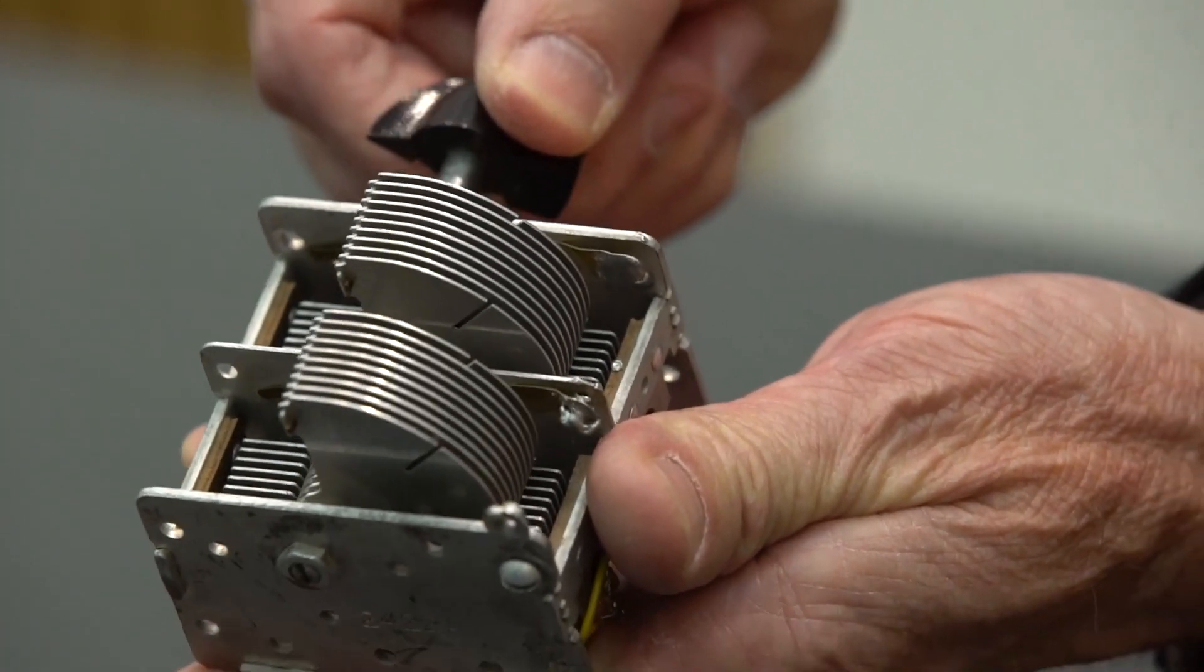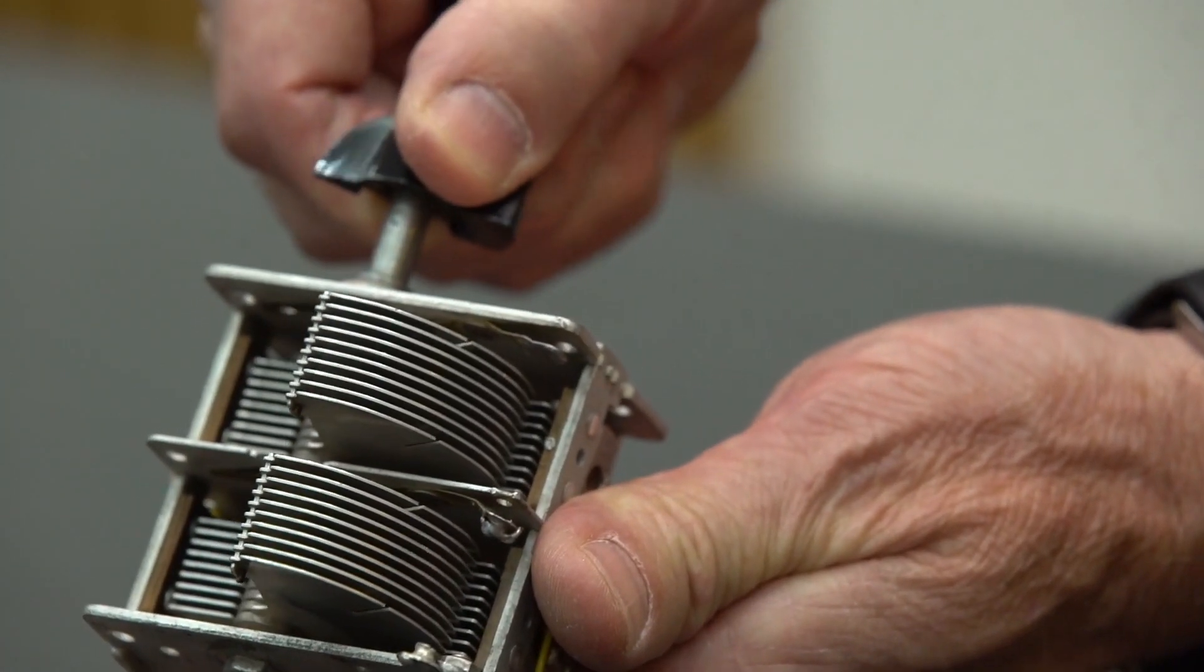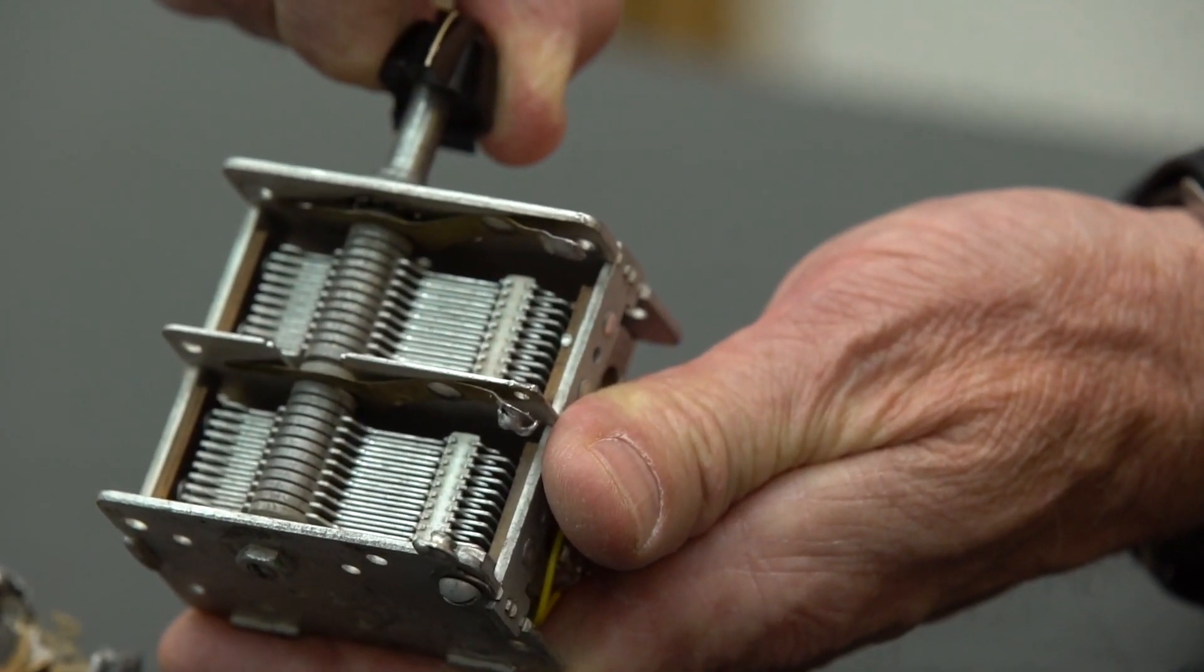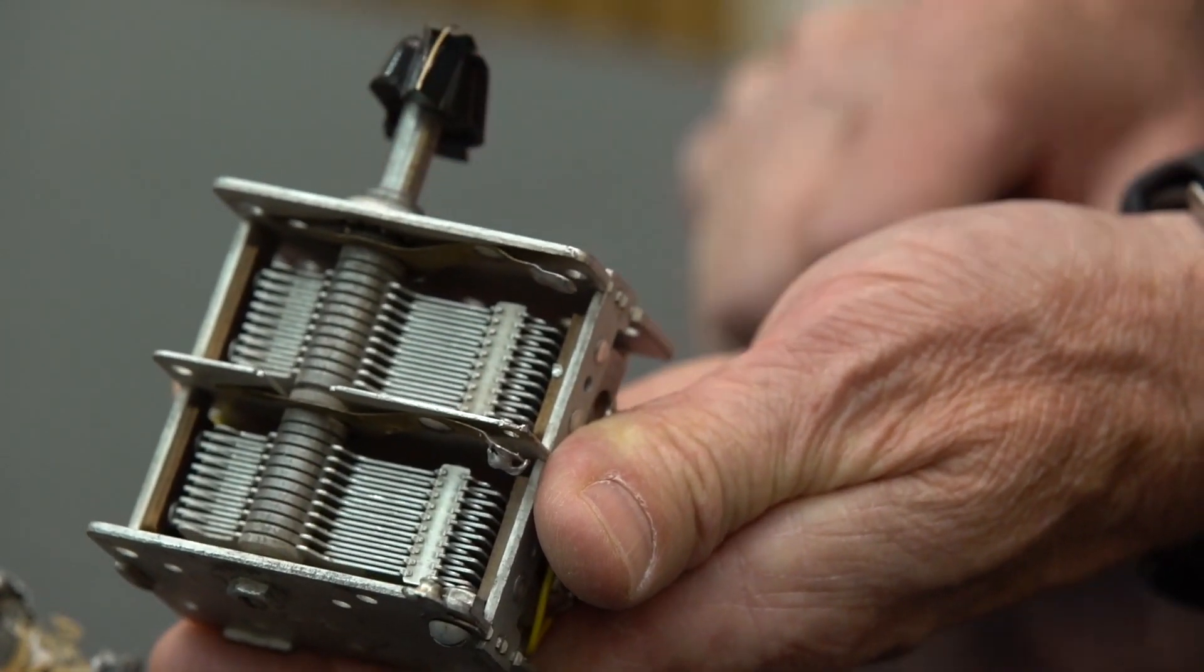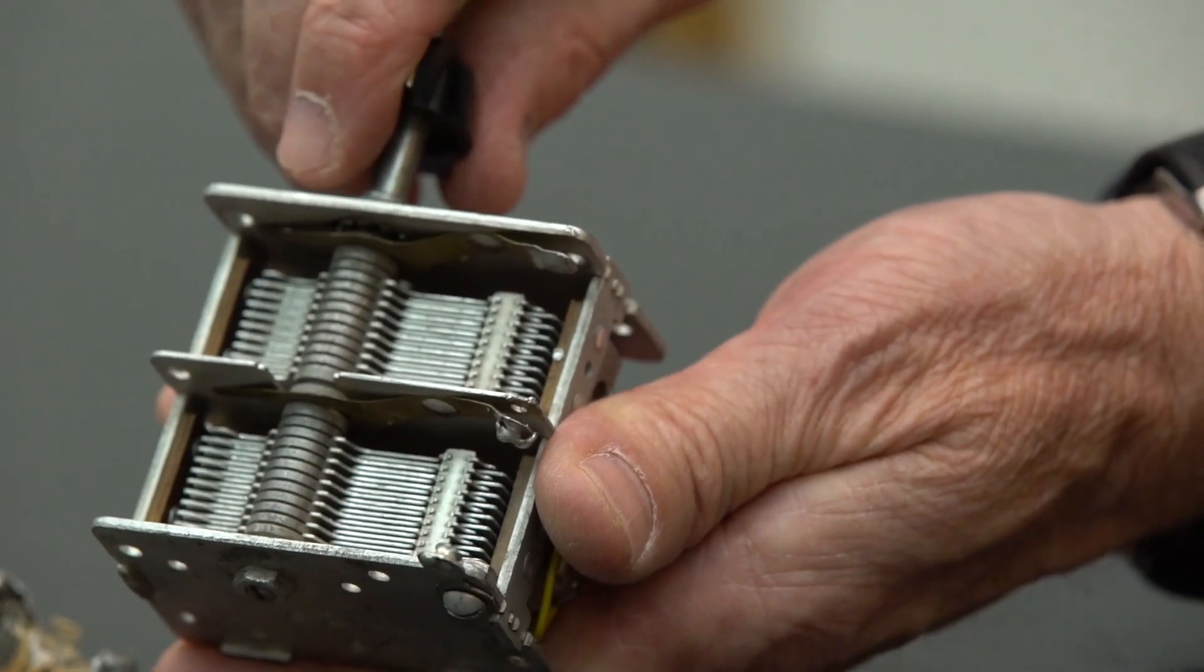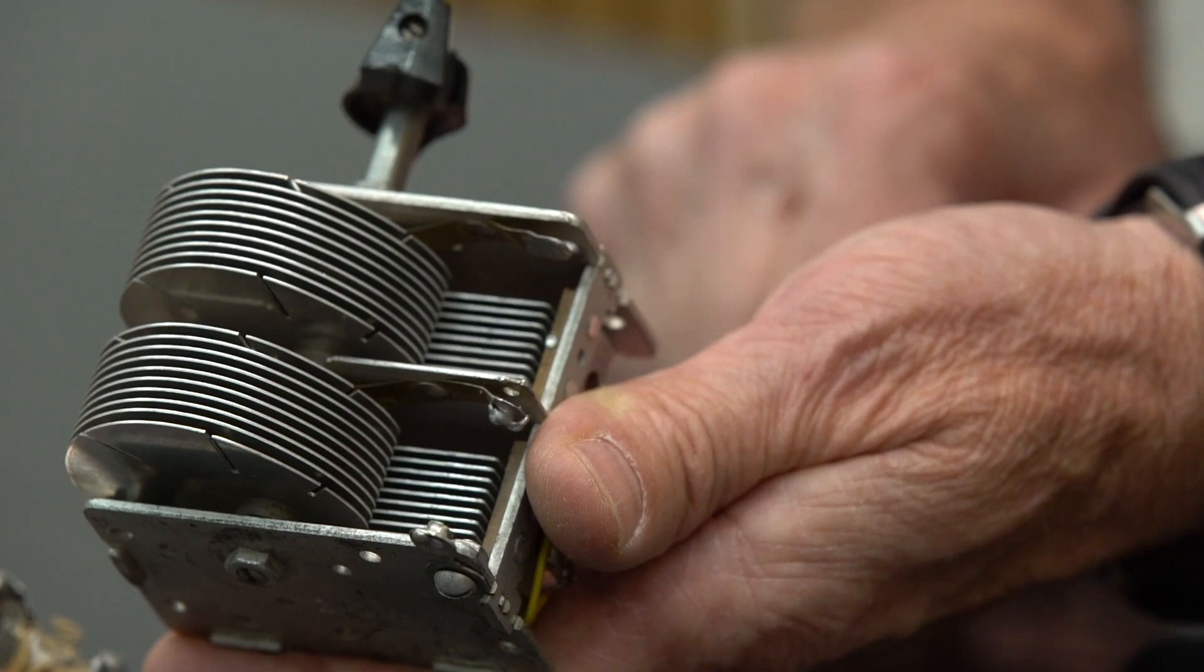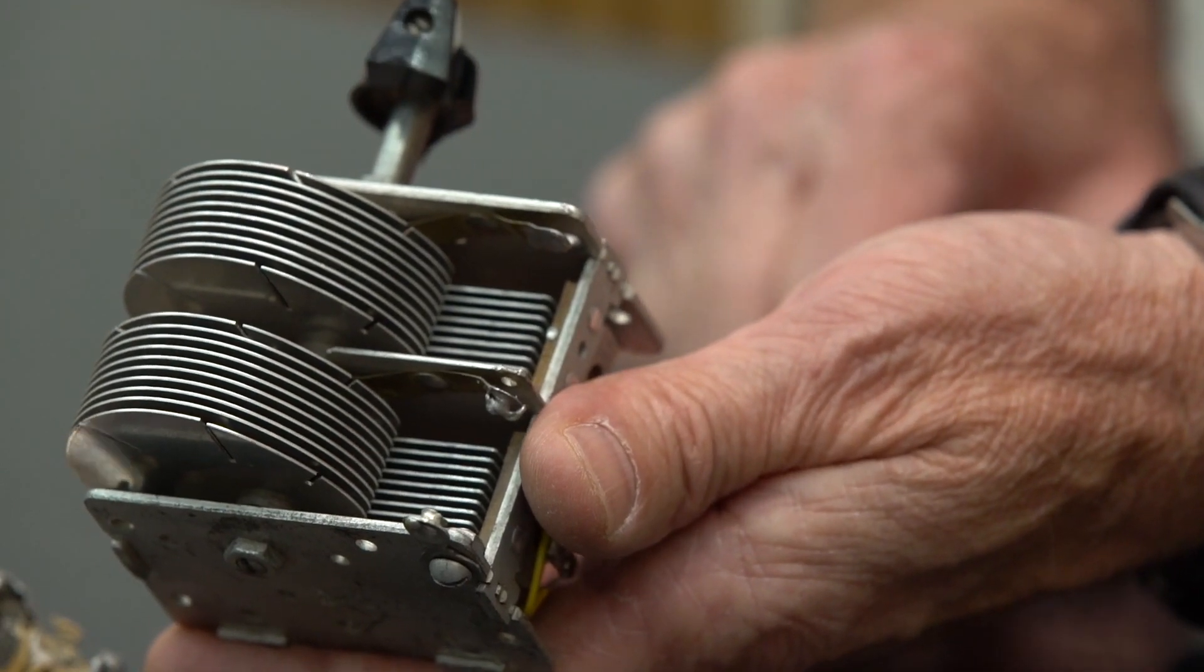Here they're partially overlapping. And here they're fully overlapping. And so here you get the maximum possible capacitance. And here you get zero capacitance. That's a variable capacitor.